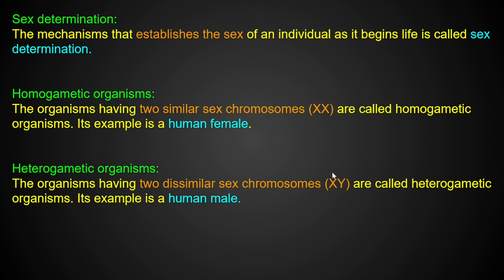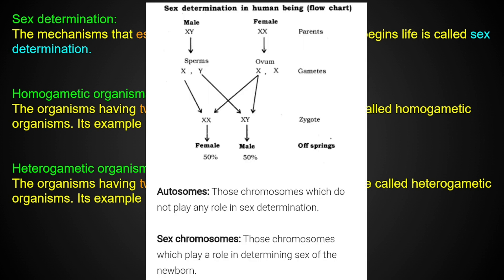We know that XX is female and XY is male. In the female, the two sex chromosomes are similar, making the female homogametic. The male has X and Y — two different sex chromosomes — making the male heterogametic. Human males are heterogametic and human females are homogametic.